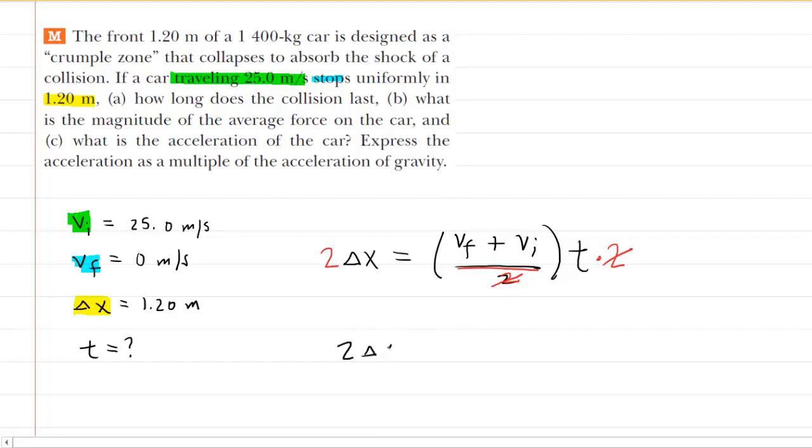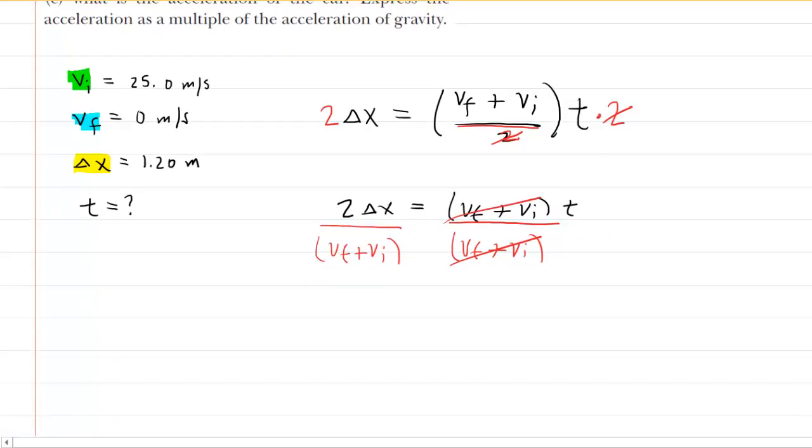We have 2 delta x is equal to final velocity plus initial velocity multiplied by time. Then to solve for time, we would divide both sides of the equation by that term in parentheses. That would cancel that term out on the right-hand side, and there we would be left with the time. So we'll just erase this since it's going to cancel. Slide the equals sign over to there, and we have our equation for time.